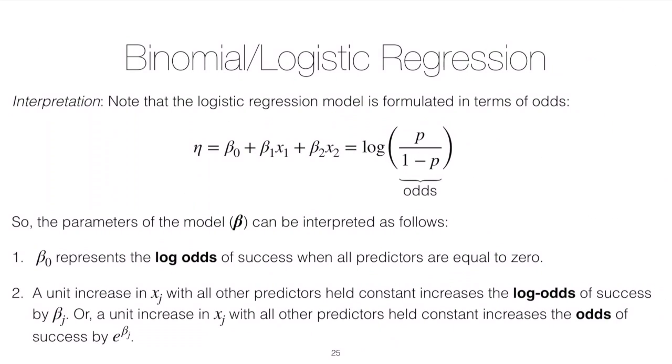Now that we've defined the odds, we can see that the logit link function is given in terms of the odds of success. We've got our linear predictor here; this equality holds because we've chosen the logit link.